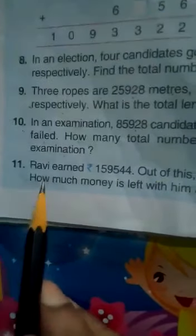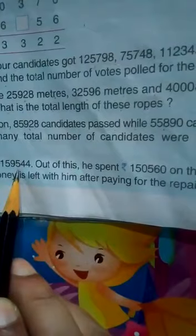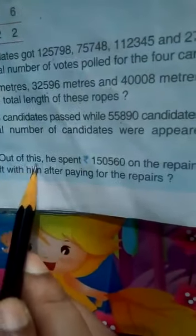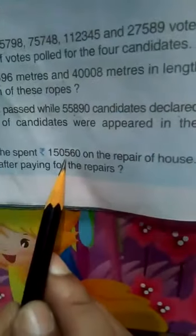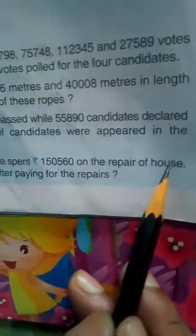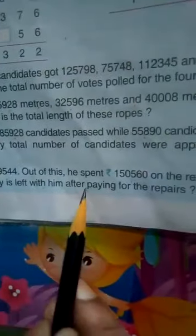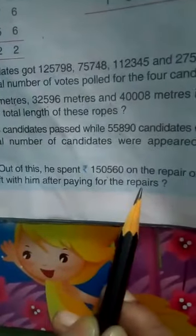Now see question number 11. Ravi earned rupees 1,59,544. Out of this he spent 1,50,560 on the repair of house. How much money is left with him after paying for the repairs?